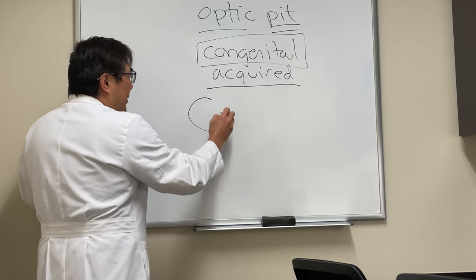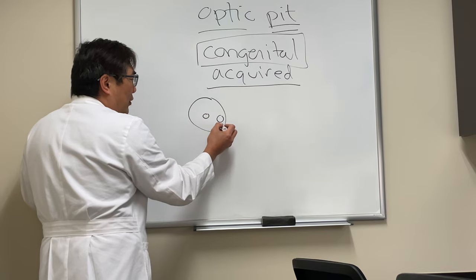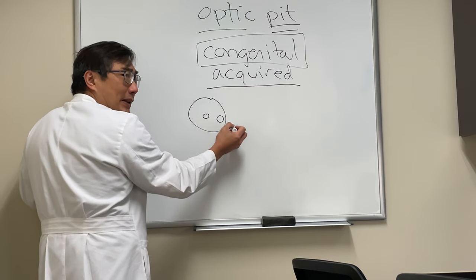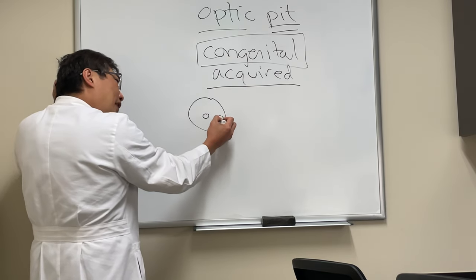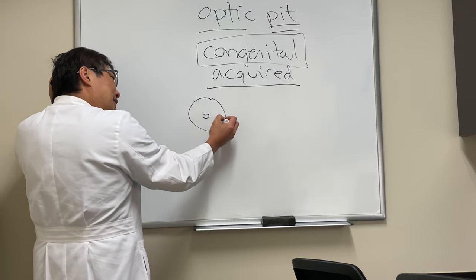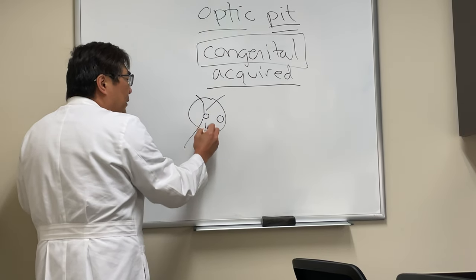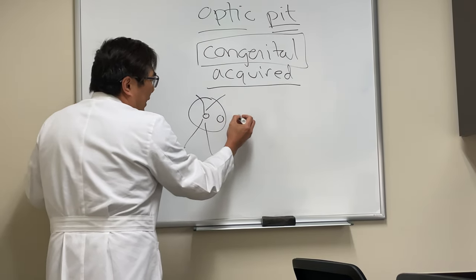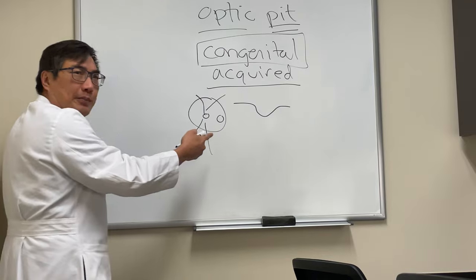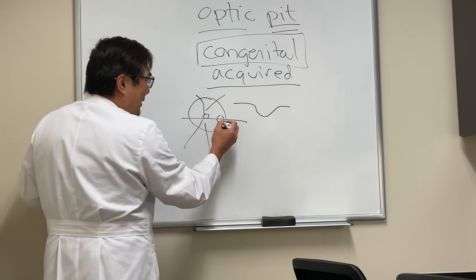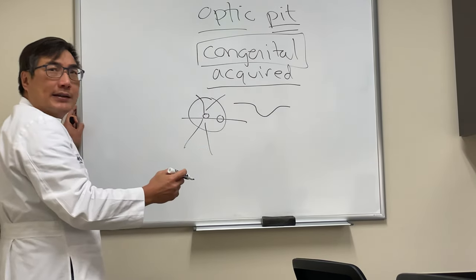The pit can be anywhere — it can be a central pit or it can be displaced towards the rim. It's often here in the temporal portion of the optic nerve, and it is a literal pit, a depression. If you run a line scan through it, it's literally a pit.